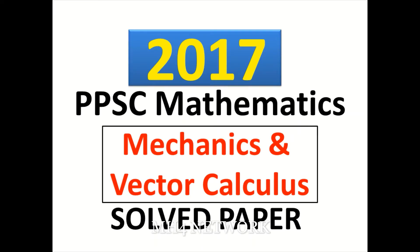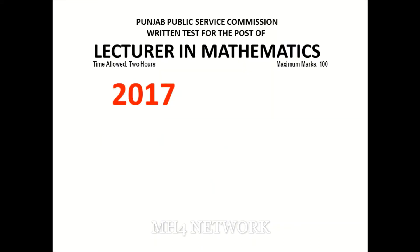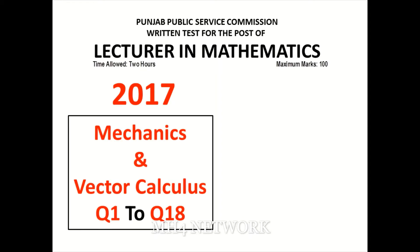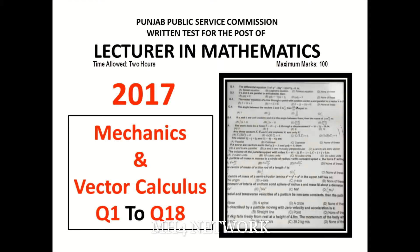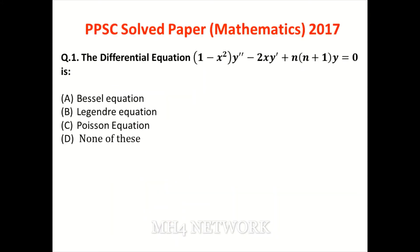2017 paper mein Mechanics aur Vector Calculus ke 18 sawaal aaye the. Pehle 18 sawaal Vector Calculus aur Mechanics ke hain. Question number one: the differential equation is — options mein Vessel, Legendre, Poisson, ya none of these hain.